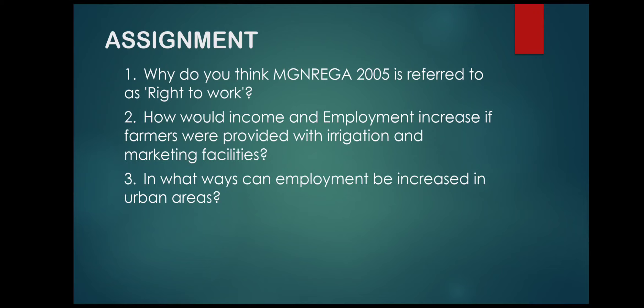These are the assignment questions: Why do you think MGNREGA 2005 is referred to as the right to work? How would income and employment increase if farmers were provided with irrigation and marketing facilities? In what ways can employment be increased in urban areas? You are supposed to complete all these questions and answers. That is it for today.